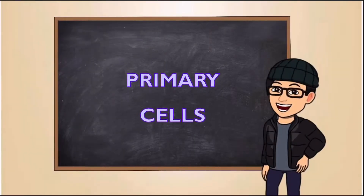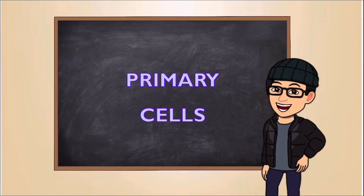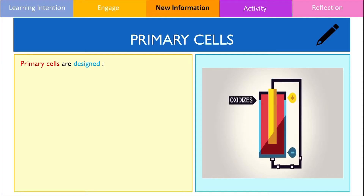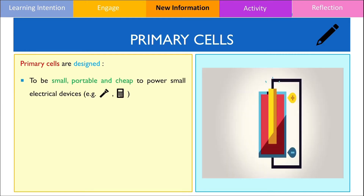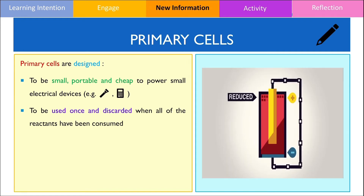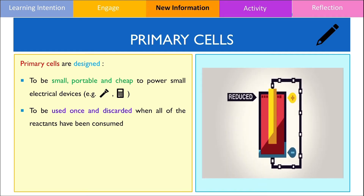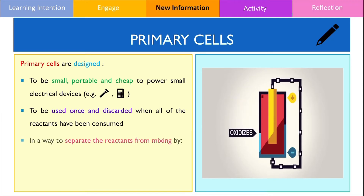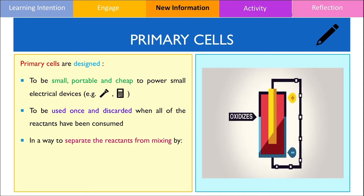Let's now look at primary cells in more detail. As stated earlier, primary cells are non-rechargeable cells and are designed to be small, portable and cheap to power small electrical devices. They are to be used up and discarded once the battery is dead, as illustrated in the animation where you can see that the reactants are gradually consumed until the battery is flat. In order for the primary cell to be functional, it needs to be engineered to convert chemical energy into electrical energy instead of thermal energy.